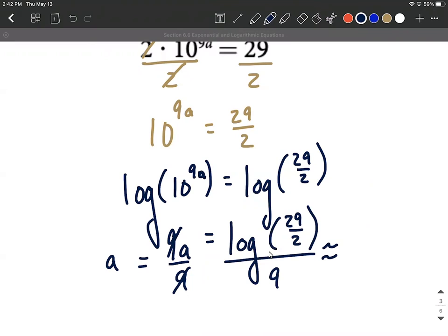But when we put this in our calculator, we can get an approximation. 0.129, I believe, is a good approximation for this.